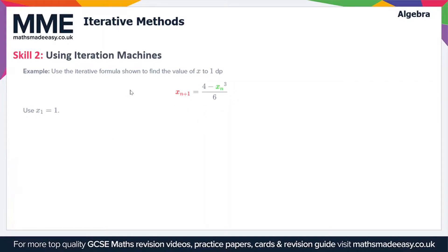In this example we've got to use the iterative formula to find the value of x to one decimal place. We plug in values of x and it's just going to keep refining that value until we get closer and closer to the actual solution, and we're going to start with x1 is equal to one. The formula is xn plus one equals four minus xn cubed, divided by six.